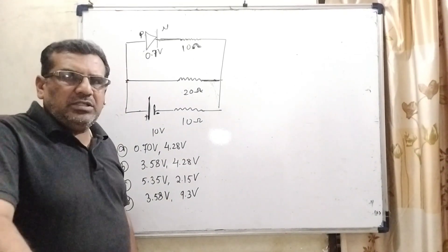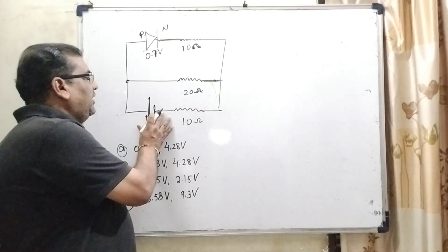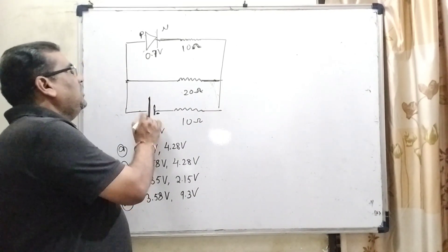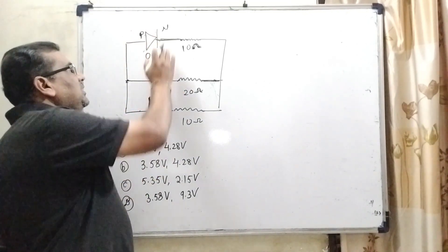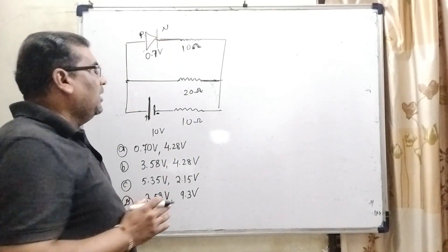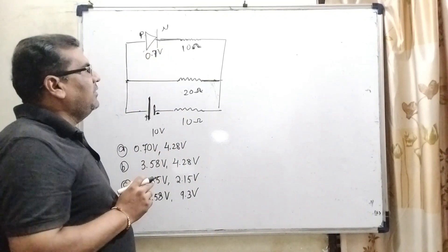Now, what is the question? Here we have given a 10V battery. Its positive terminal is connected with P and negative terminal is connected with N. And potential drop of this diode is given, that is 0.7V.